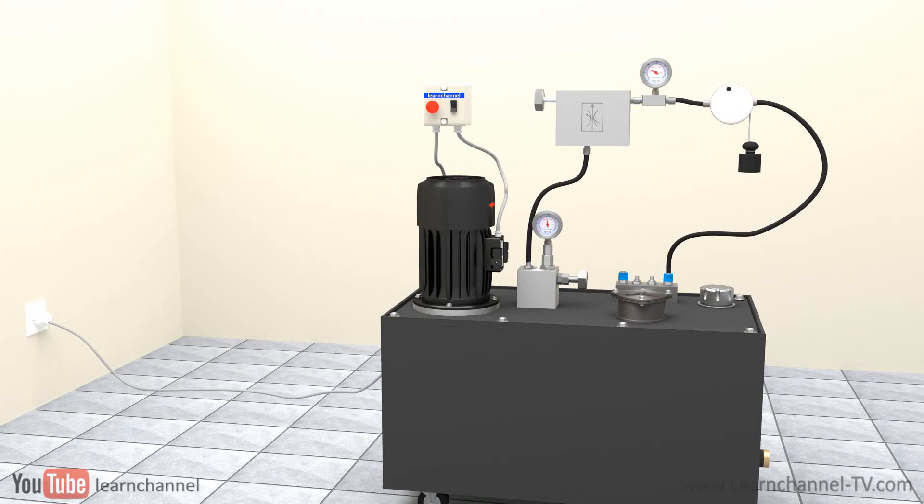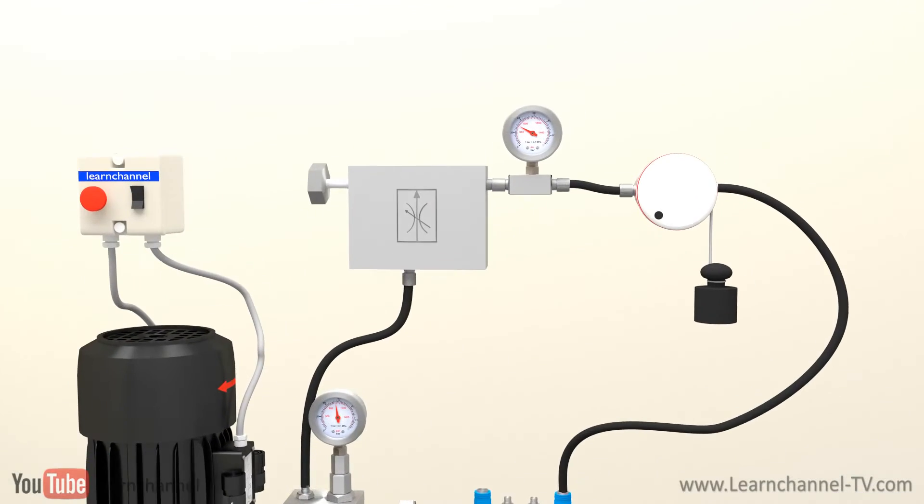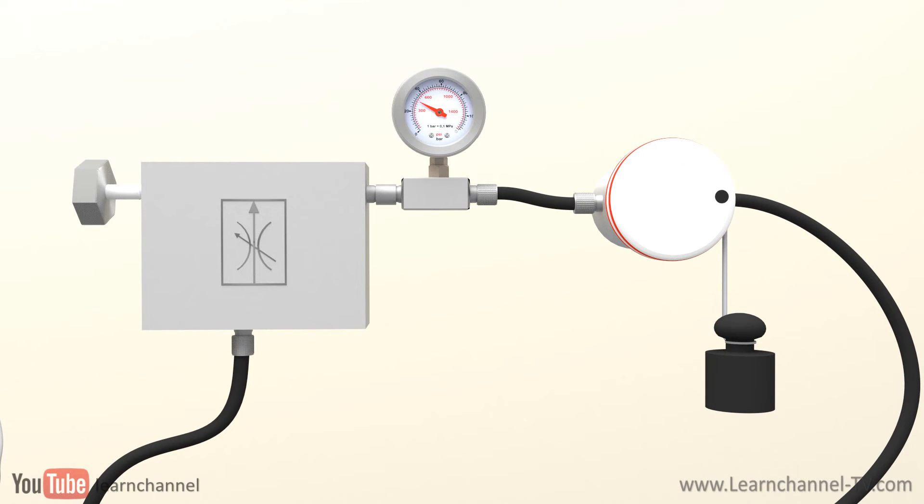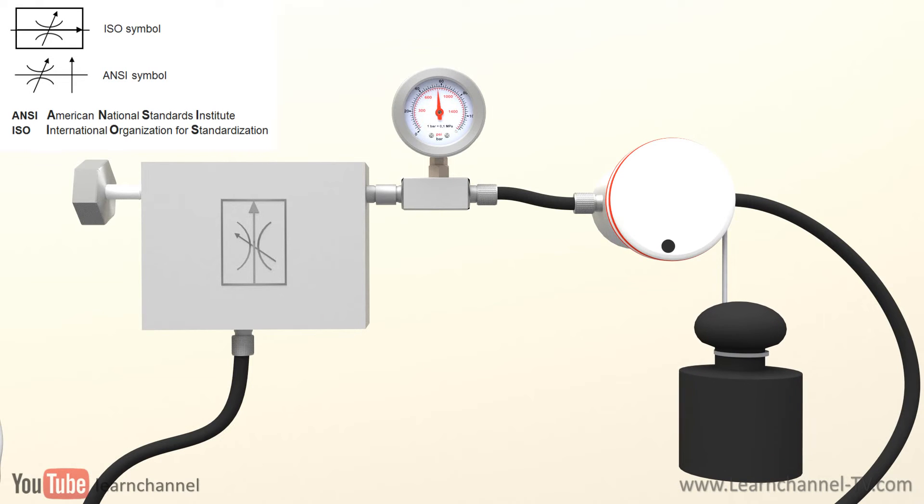Unfortunately, using a simple throttle leads to change in volume flow when load changes. So, if you want to keep the speed of a cylinder or hydraulic motor constant, even with different loads, you should use a pressure compensated flow controlled valve.